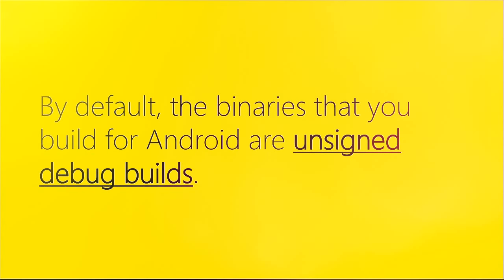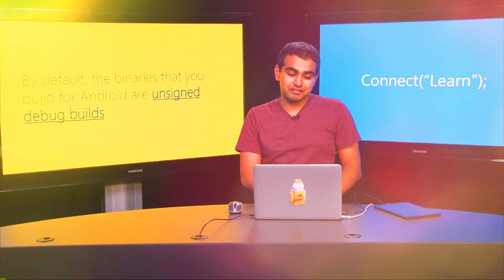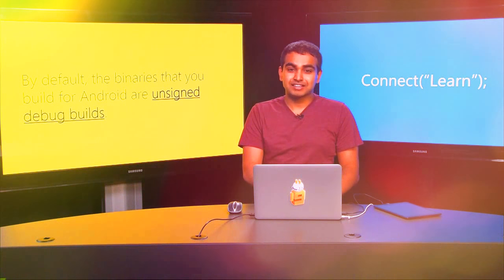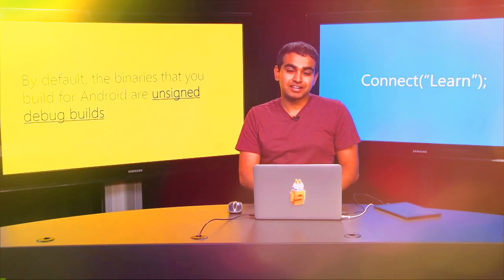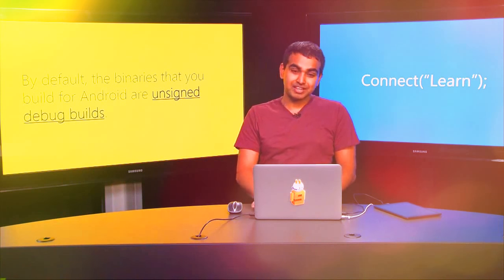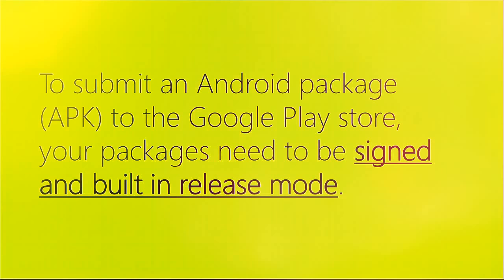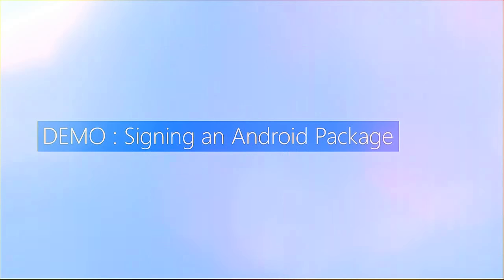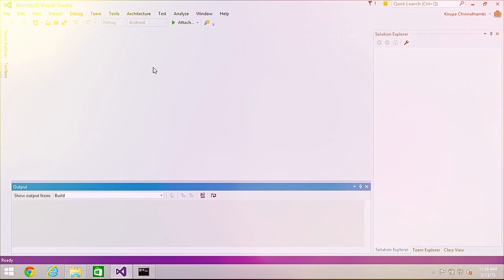To submit a package — an APK — to the Google Play Store, the binaries you create need to be both signed and built in release mode. I'm in Visual Studio, and I'll create a new project called 'signing demo.' The first thing I'm going to do in the debug toolbar is change the solution configuration from Debug to Release, point to a device, and build the application using Build > Build Solution.